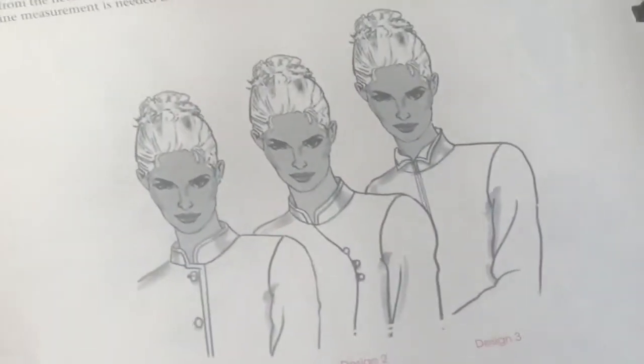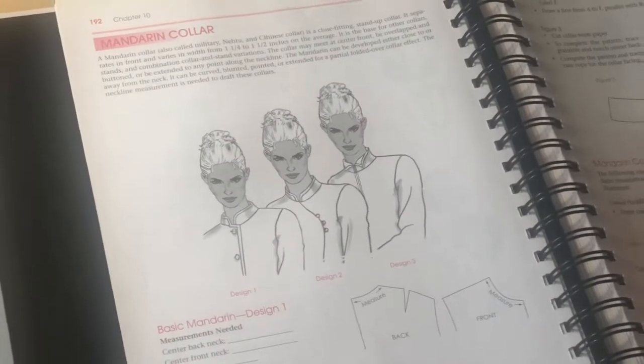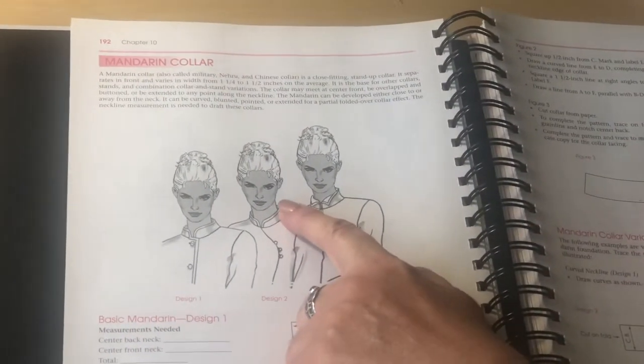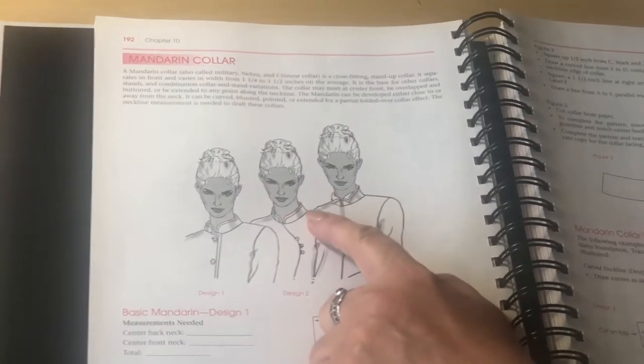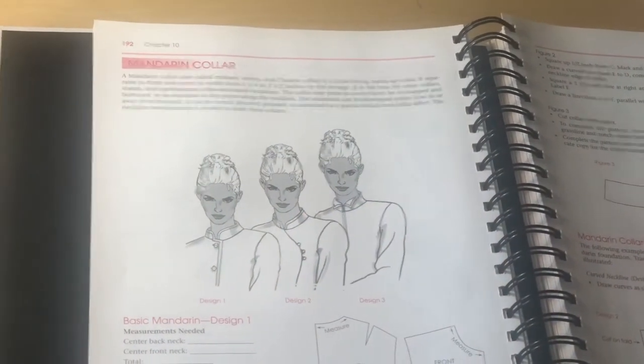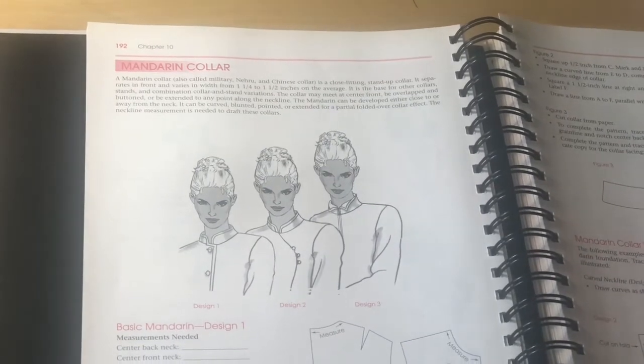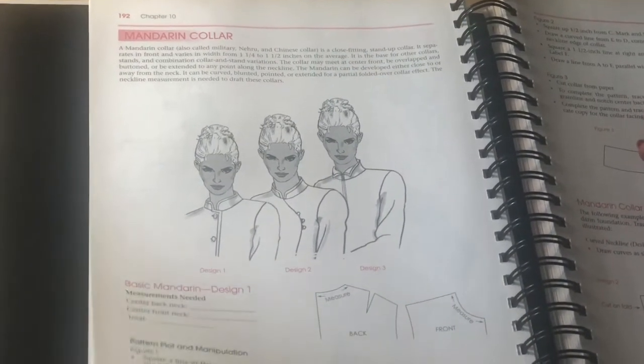The Mandarin collar is called military collar, narrow collar, or Chinese collar. Pretty much it's a basic stand-up collar that usually measures inch and a quarter or something like that. In order for us to cut any collar, we need to understand their structure and how they work.